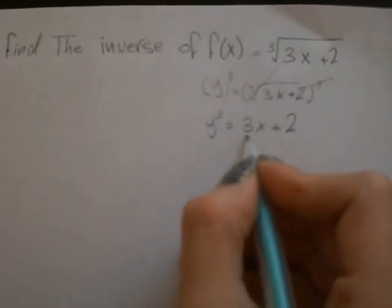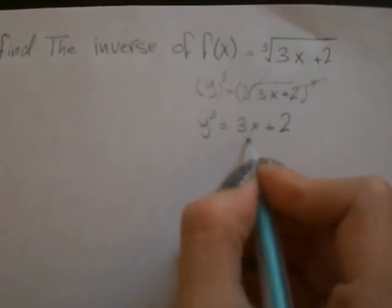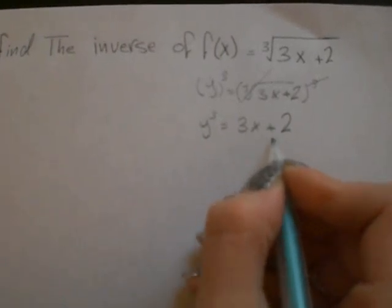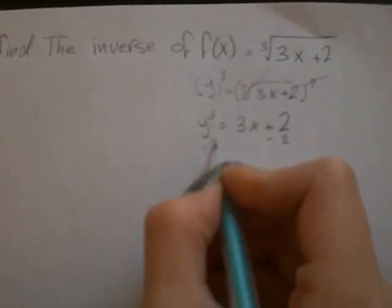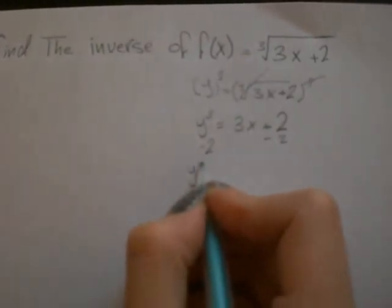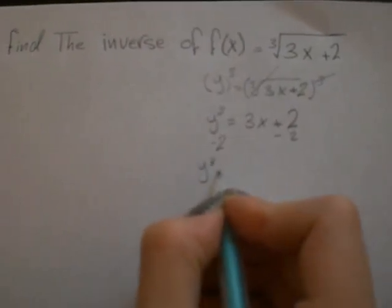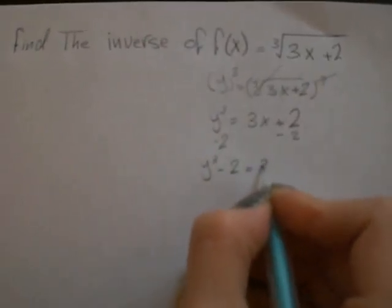I have to find now for the x so I can have it by itself. I will subtract 2. I will have y cubed minus 2 equal 3x.